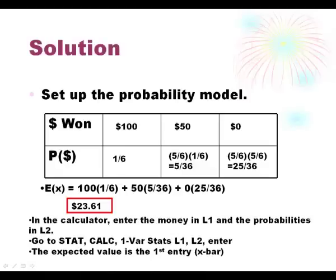Now you can do expected value in your calculator. If you go to Stat Edit in your calculator, we want to enter the dollar amounts as L1 and the probabilities as L2. And when you get those entered you want to go to Stat Calculate, 1VarStats, put in L1, L2 afterwards and hit enter. And it'll give you the expected value as the first entry which is the X bar. And it should say $23.61.